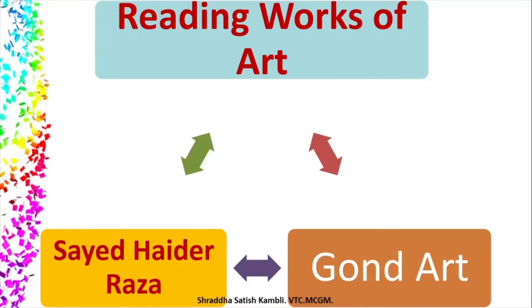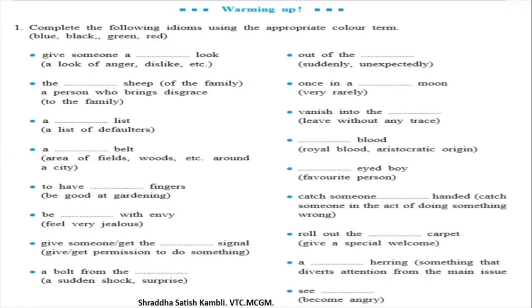I will not be reading the entire textbook but giving you an overview. Reading from the textbook will help you understand the lesson better. As we usually do, let us look at certain exercises from the warming up part. The first exercise has to do with colors, which are an integral part of drawing and painting. We are supposed to complete the idioms using the appropriate color terms.